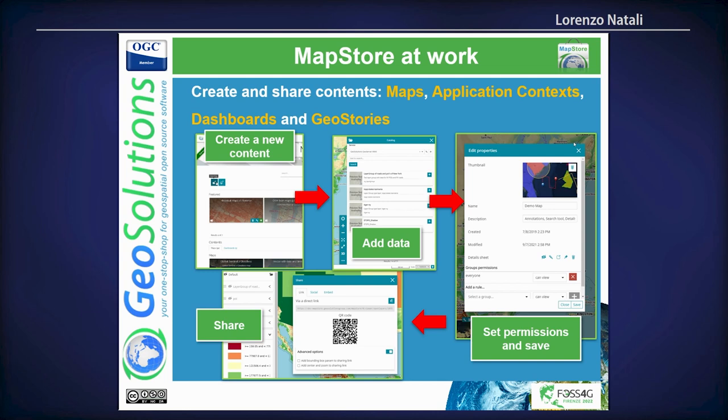In MapStore you can create different types of content, and for each type of content you create, you can set the permissions so you can share with user groups created on the server. You can create groups of users that share the same contents and work on them, and you can also share with guest users or the public users of your portal if it's public.